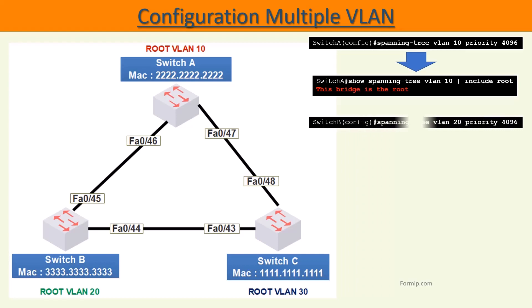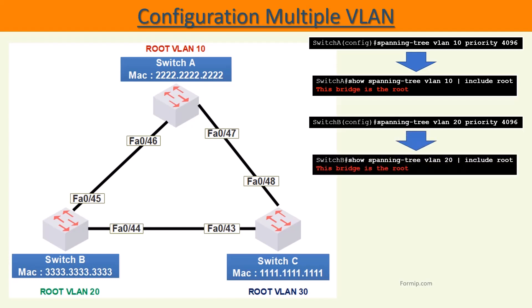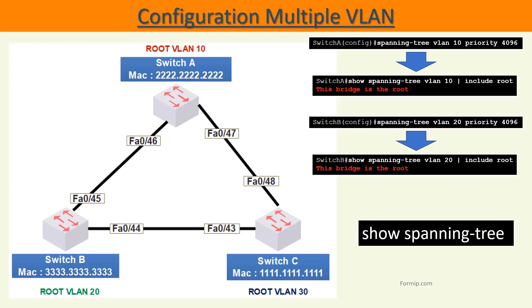We do the same on switch B, but this time on VLAN 20. Before, we only had the interface of switch C which was blocked. Now we will have different blocked interfaces because we have a different root bridge for each VLAN. The 'show spanning-tree' command is very useful as it provides all the information you need to analyze the operation of the spanning tree.